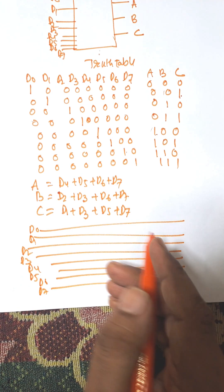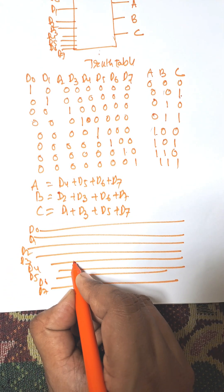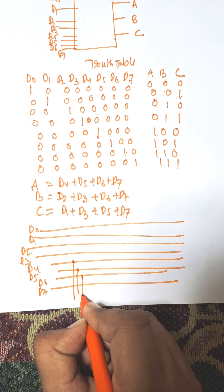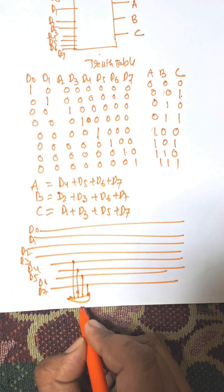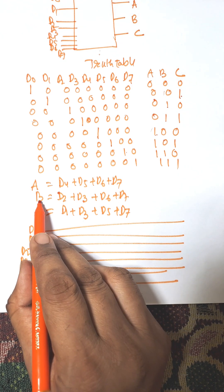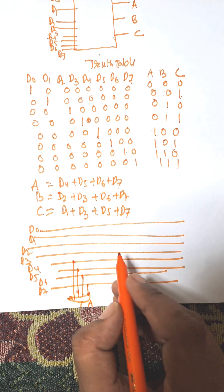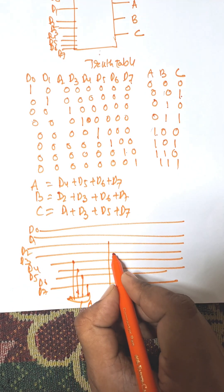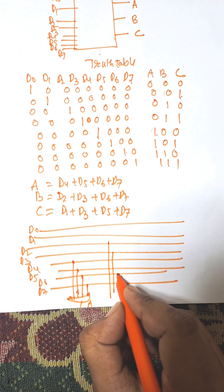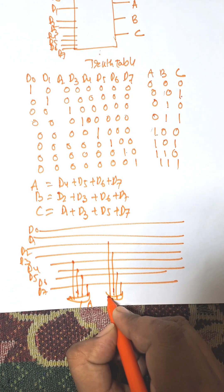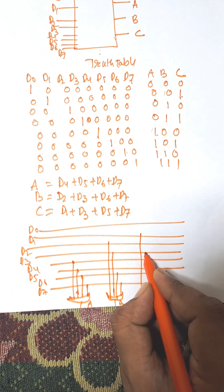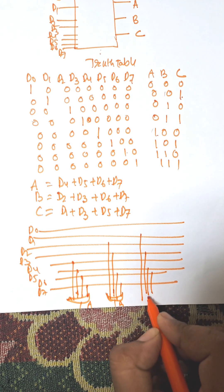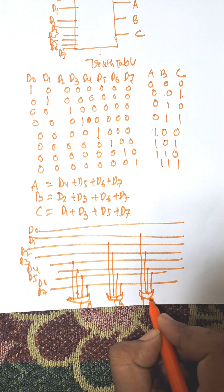A equals d4 plus d5 plus d6 plus d7, so we connect d4, d5, d6, and d7 to an OR gate for output A. B equals d2 plus d3 plus d6 plus d7, so d2, d3, d6, d7 connect to an OR gate for B. And finally, d1, d3, d5, d7 connect to another OR gate for output C. This is the circuit diagram for octal-to-binary encoder.